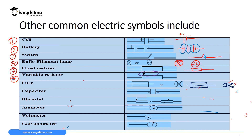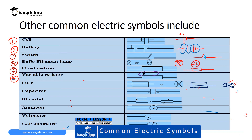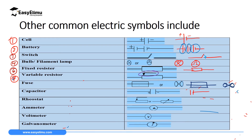Capacitors are drawn similarly to cells, but the key difference is that both vertical lines of a capacitor are the same height. A capacitor has a positive side and a negative side, but both lines are equal — whereas for a cell, one line is large (positive) and the other is small (negative). We will discuss capacitors further in electrostatics in Form 3, where we will learn that capacitors store electric charges.